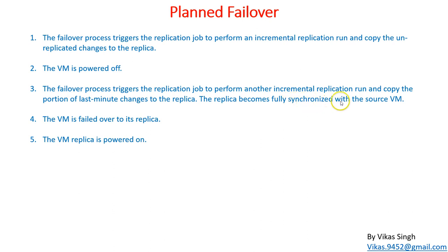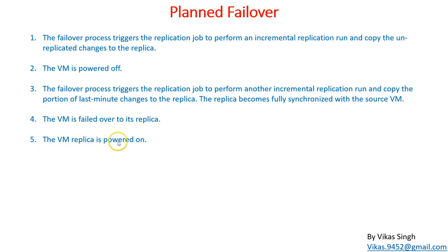The replica becomes fully synchronized with the source VM. Both the replica and the original virtual machine are fully synchronized, and then the VM is failed over to its replica and the replica machine is powered on. This is the process that takes place during planned failover. We are going to test this planned failover in the next videos.